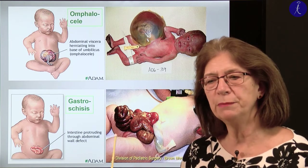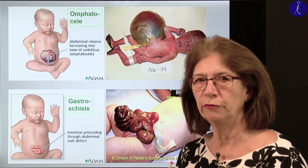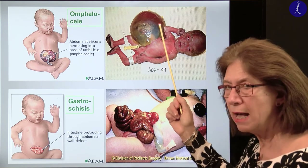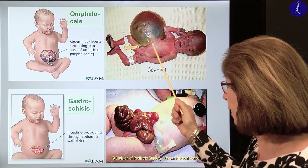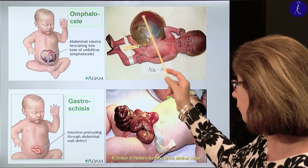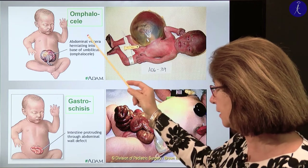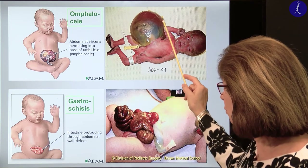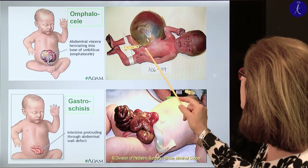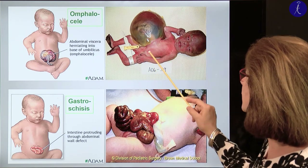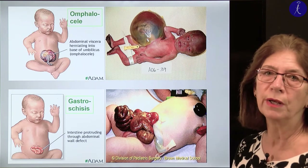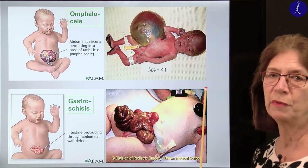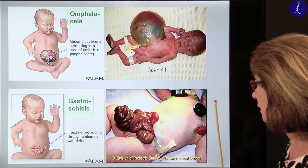In omphalocele, these bowel loops are covered by the amnion. This is obviously an abortion baby, but sometimes live babies are born with this problem. Another problem may be gastroschisis. In this case there is a true gap, usually on the right side of the umbilicus — there is a normal umbilicus and the bowels are hanging into the amniotic fluid. A difference in the background is that omphalocele is usually combined with chromosomal defects whereas gastroschisis is not.